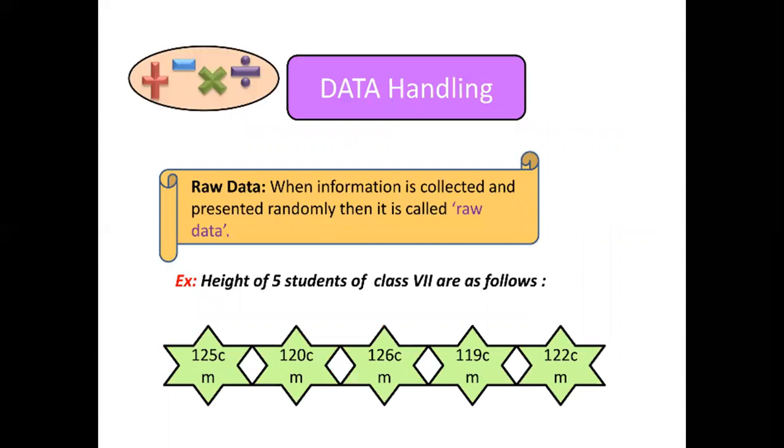Now, let's learn about raw data. When information is collected and presented randomly, then it is called raw data. The another name of raw data is ungrouped data. The data which is collected and shown as it is without any specific arrangement is called raw data.